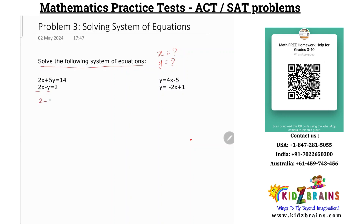Let me rewrite this: 2x plus 5y is equal to 14, and 2x minus y is equal to 2. The first step is to see whether the variables are lined up under each other in the same way. The first equation has your x term and then the second equation has your x term lined neatly below each other. Note down what is the coefficient of these terms. The x coefficient is 2 and y coefficient is minus 1 in the second equation, while the x coefficient is 2 and y coefficient is 5 in the first equation.